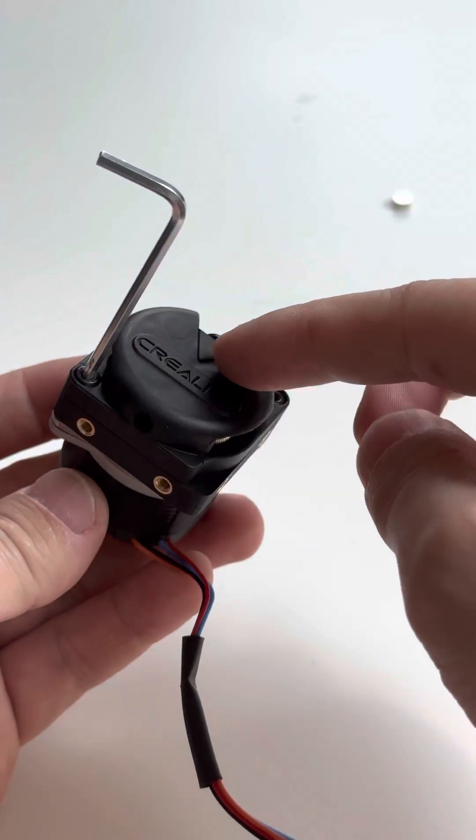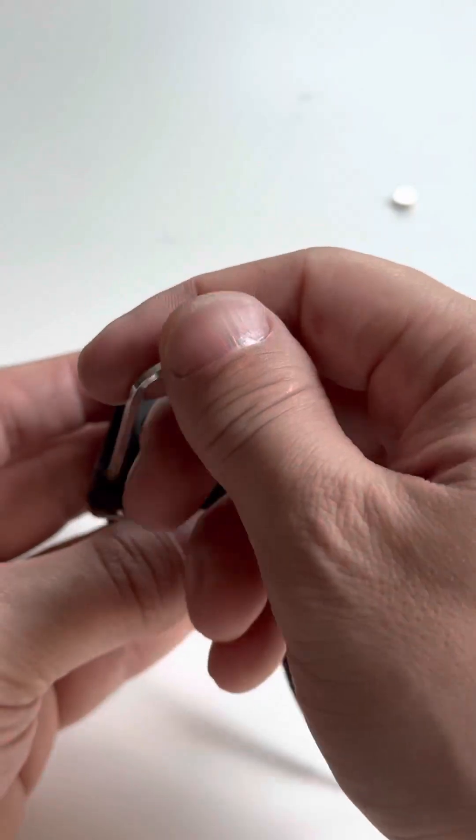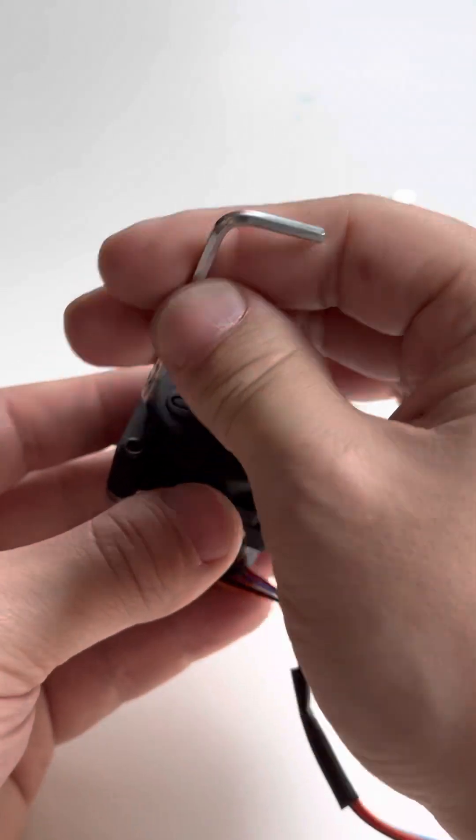Alright, so here we're taking a closer look at the extruder that's found on the Creality K1. If you just undo these two screws, you can disassemble it.